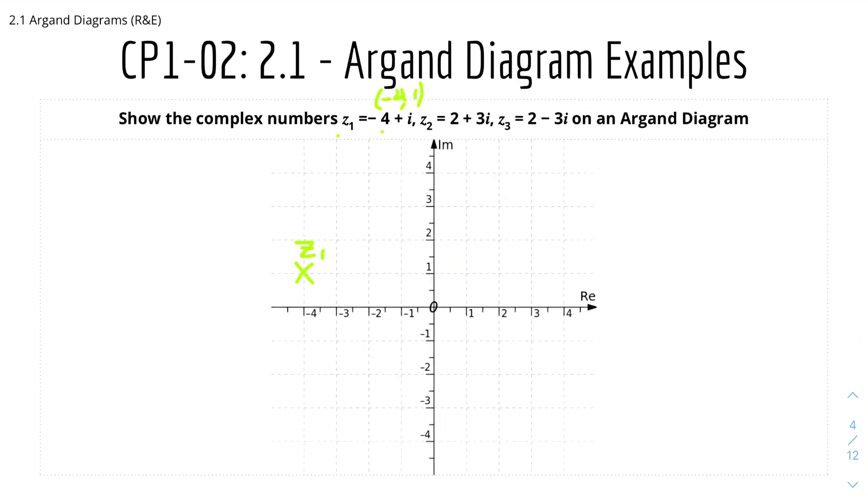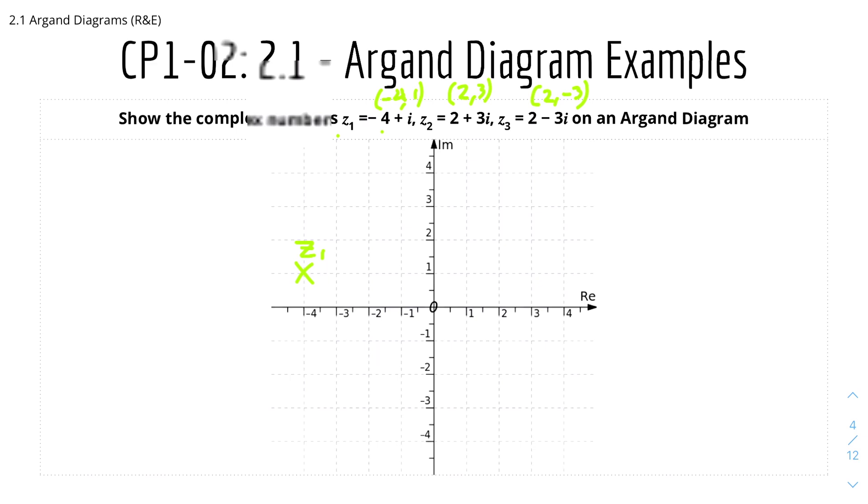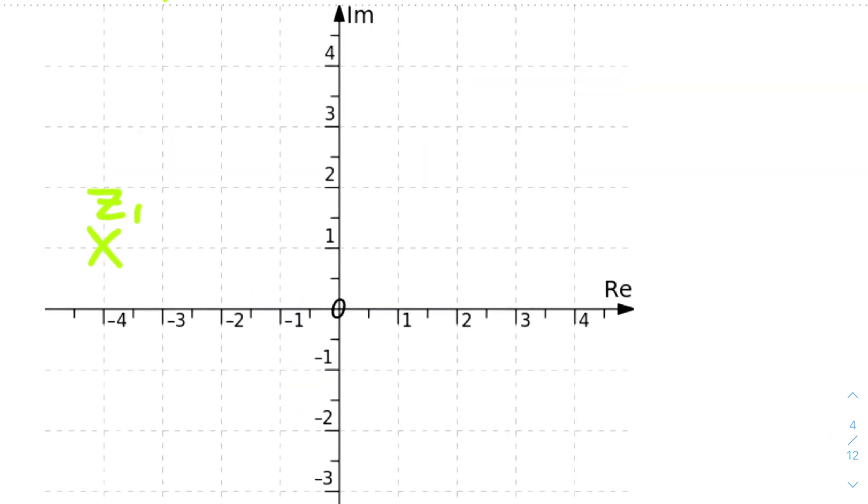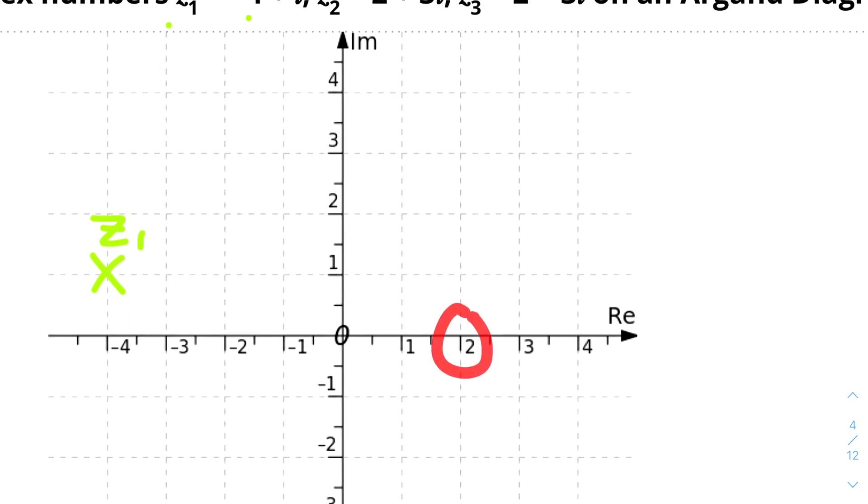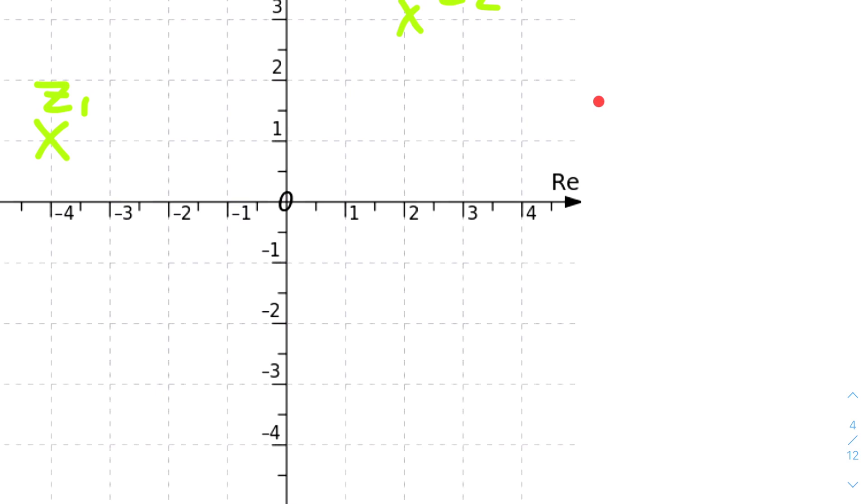z2 is 2 plus 3i, which is basically 2, 3. And z3 is 2 minus 3i. Let's put z2 at 2, 3. That means it's 2 on the real and 3 on the imaginary, which is here. z3 is 2 minus 3i. That means it's on the same vertical line. 2 minus 3i will be around here.